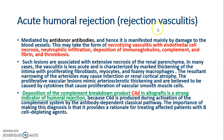Acute humoral rejection, or rejection vasculitis, is mediated by anti-donor antibodies and is manifested mainly by damage to the blood vessels. There is necrotizing vasculitis with endothelial cell necrosis, neutrophilic infiltration, deposition of immunoglobulin, complement, and fibrin, and formation of thrombus. Such lesions are associated with extensive necrosis of the renal parenchyma. The deposition of the complement breakdown product C4d in allografts is a strong indicator of humoral rejection.